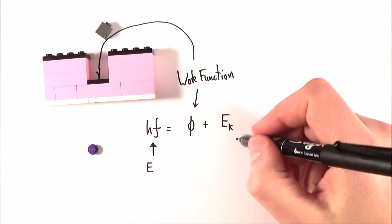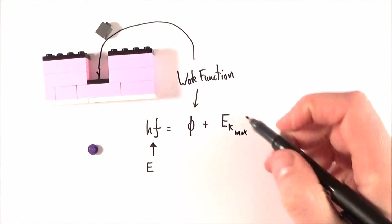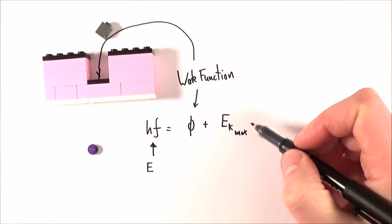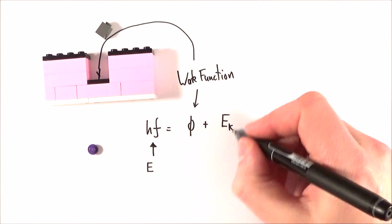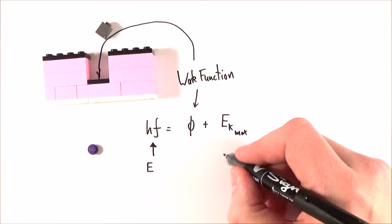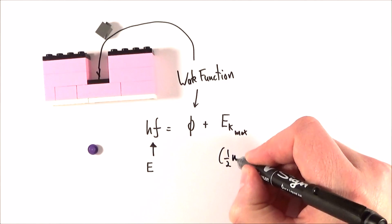And then finally, this is the maximum kinetic energy that the things could have. So Ek being the kinetic energy, which obviously we know is equal to a half mv squared.